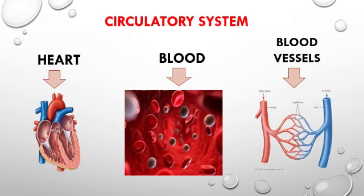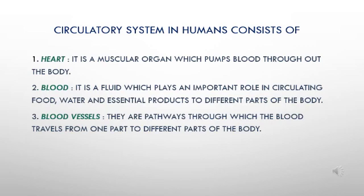So children, the circulatory system in human beings, which is also called the cardiovascular system, is a network consisting of heart, blood and blood vessels. It consists of the heart, which is a muscular organ that pumps blood throughout the body; blood, which is a fluid that plays an important role in circulating food, water and essential products to different parts of the body; and blood vessels, which are the pathways through which blood travels from one part to different parts of the body.